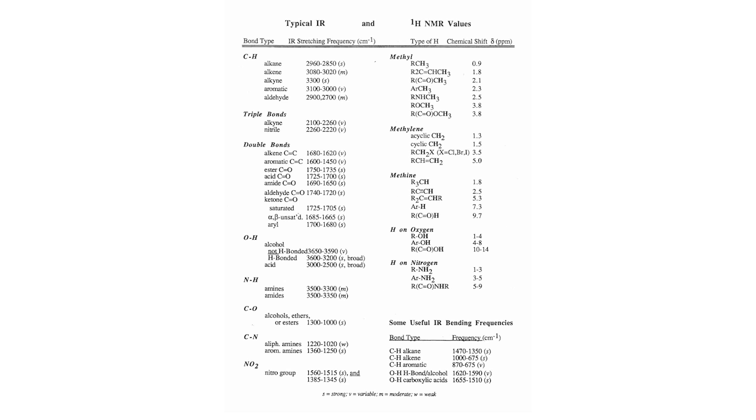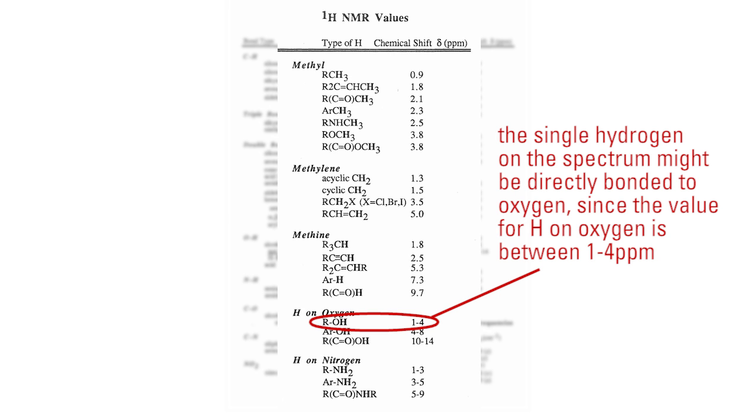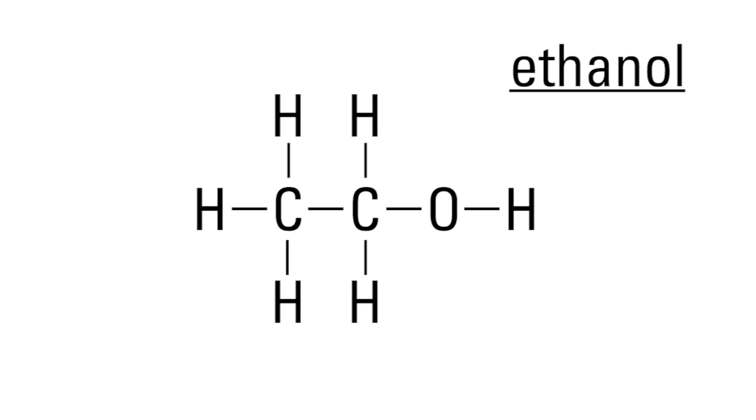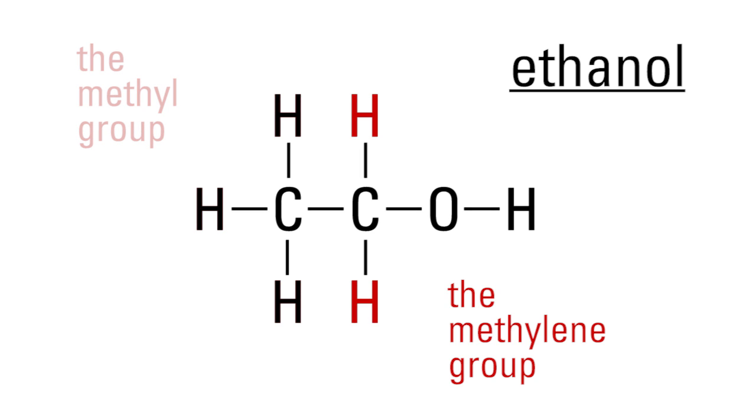Now, let's look at the table and determine what information can be gathered from the chemical shifts. The single hydrogen on our spectrum might be directly bonded to oxygen, since the value for H on oxygen is between 1 to 4 ppm. If this is the case, then we have an alcohol as our functional group in this molecule, and it would have to be the spectrum of ethanol. As you can see, ethanol has a group of three hydrogens, the methyl group, and a group of two hydrogens, the methylene group.